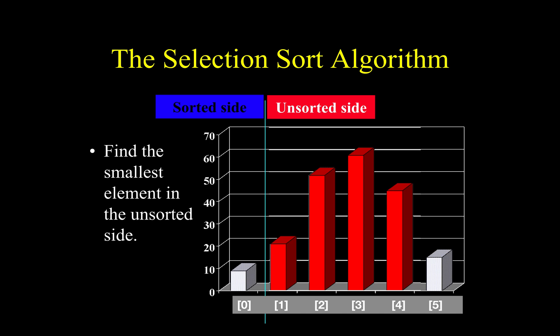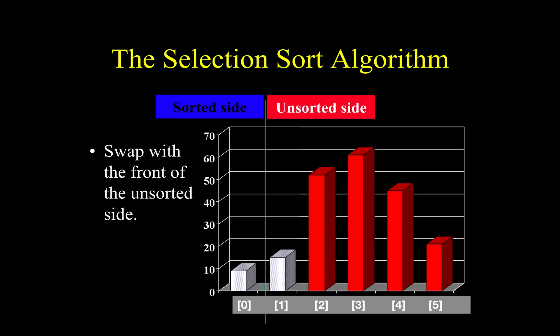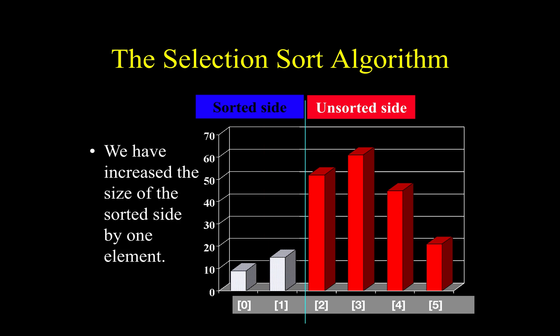Then you again increase the sorted size. You can see the sorted side is gradually getting bigger and the unsorted side is shrinking. Again, you iterate through the unsorted side and you find the smallest, and you swap it with the first.